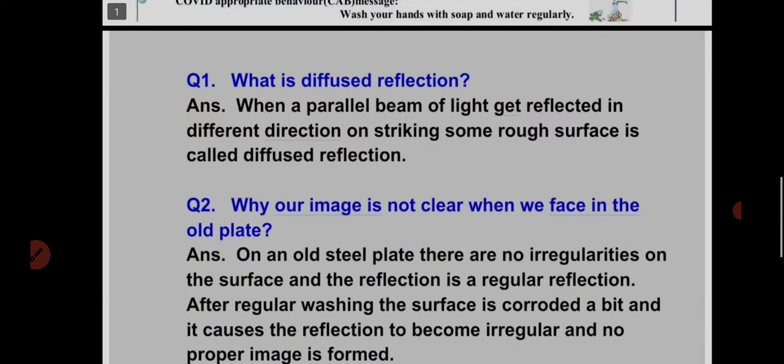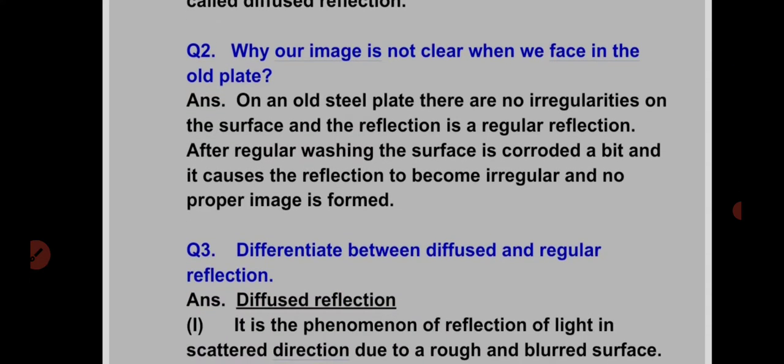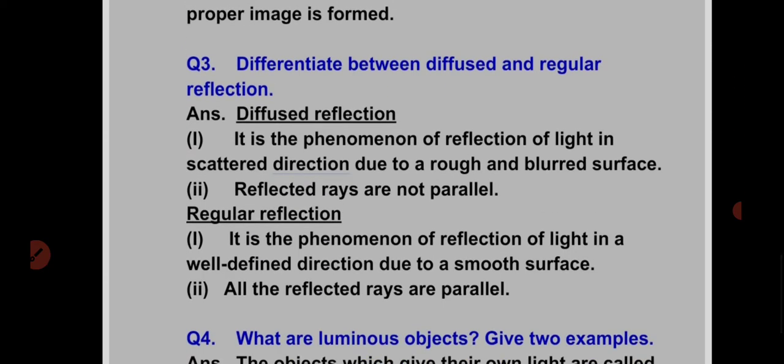Now, question answers from the worksheet. What is diffuse reflection? When a parallel beam of light gets reflected in different directions on striking a rough surface, it is called diffuse reflection. Why is our image not clear when we look in an old plate? In an old steel plate, after regular washing the surface is corroded a bit, the polish wears off, and this causes the reflection to become irregular so no proper image is formed.